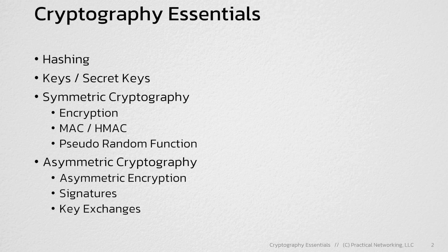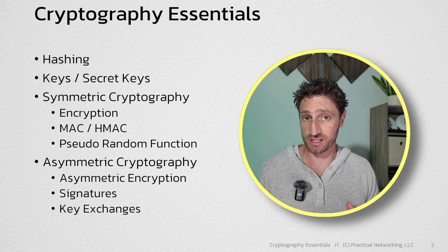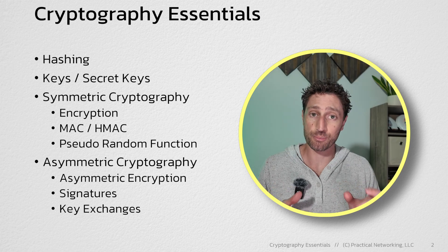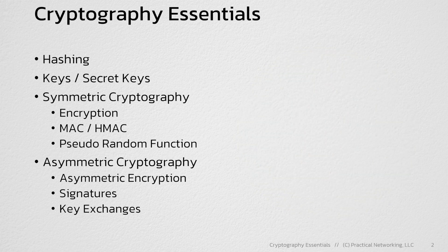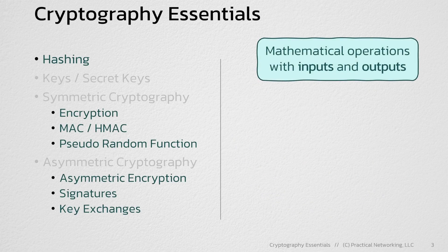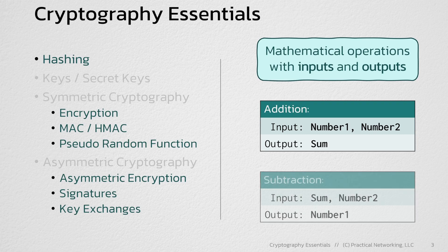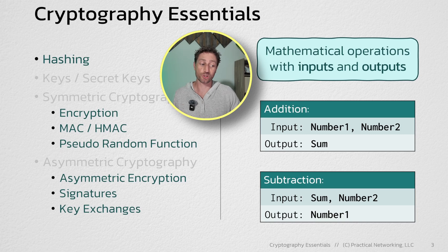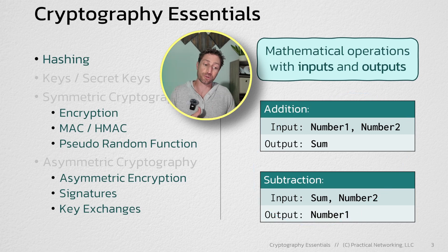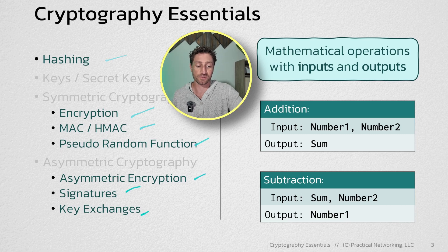Here are all the different lessons we're going to include in this modern cryptography essentials series. What I want to do differently with this series is show you how each of these operations are different mathematical formulas. For each of the cryptographic mathematical operations on this list, I want to show you the exact formulas you need to feed in to do the operation, as well as what you need to get out to undo the operation where applicable. So if you're taking notes, look out for boxes that look just like this, so you can understand exactly what goes into and comes out of these seven cryptographic operations.